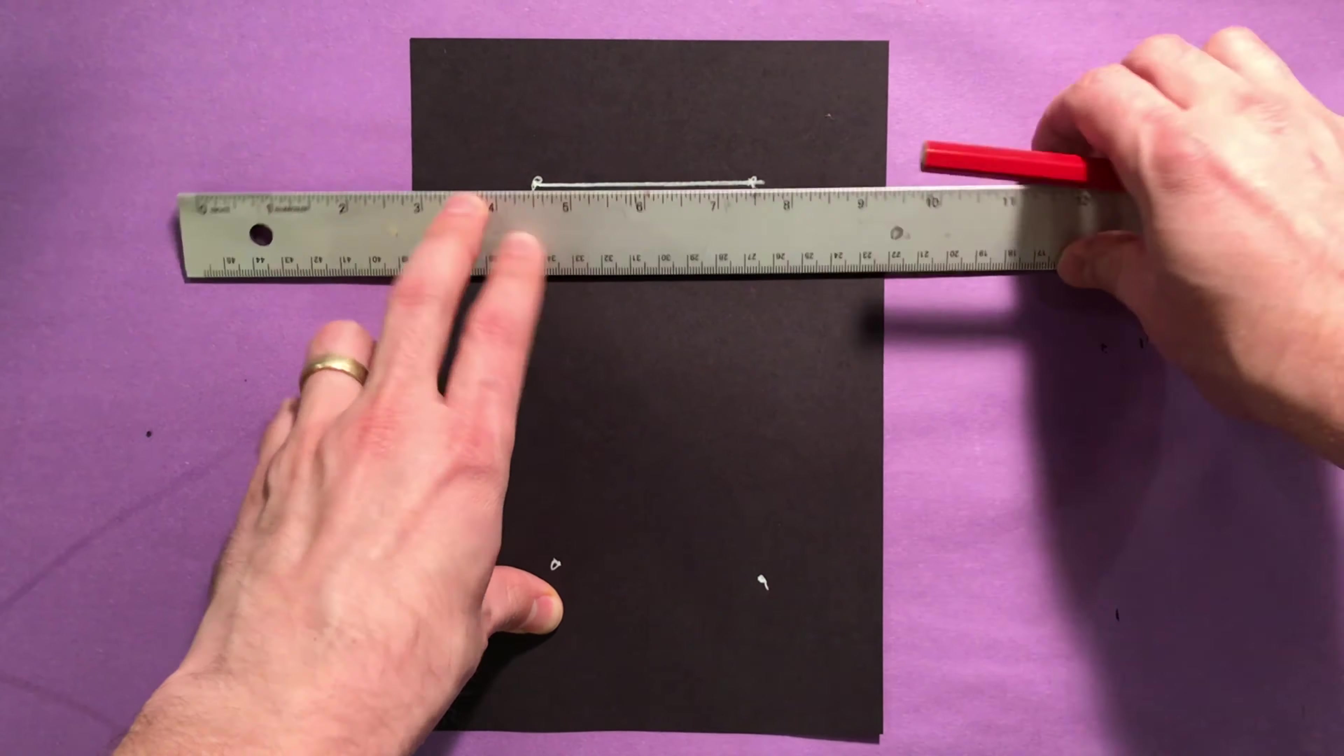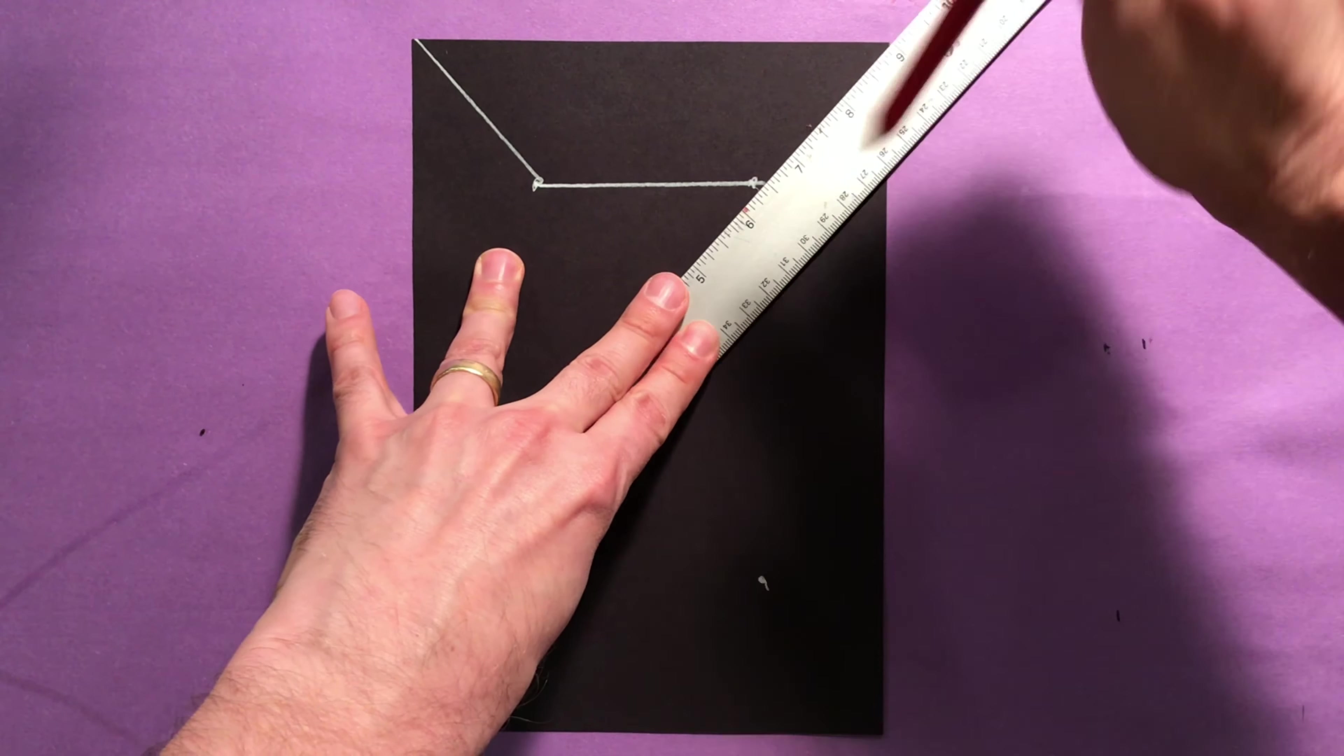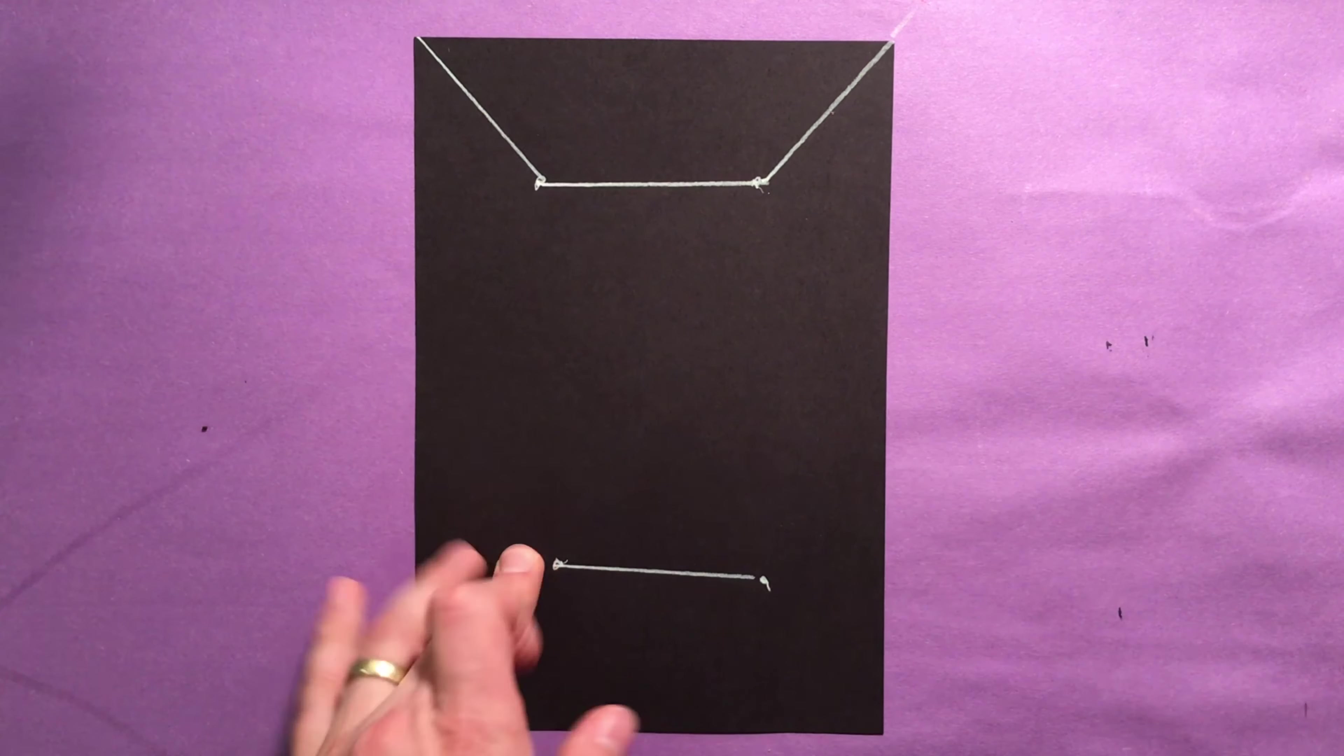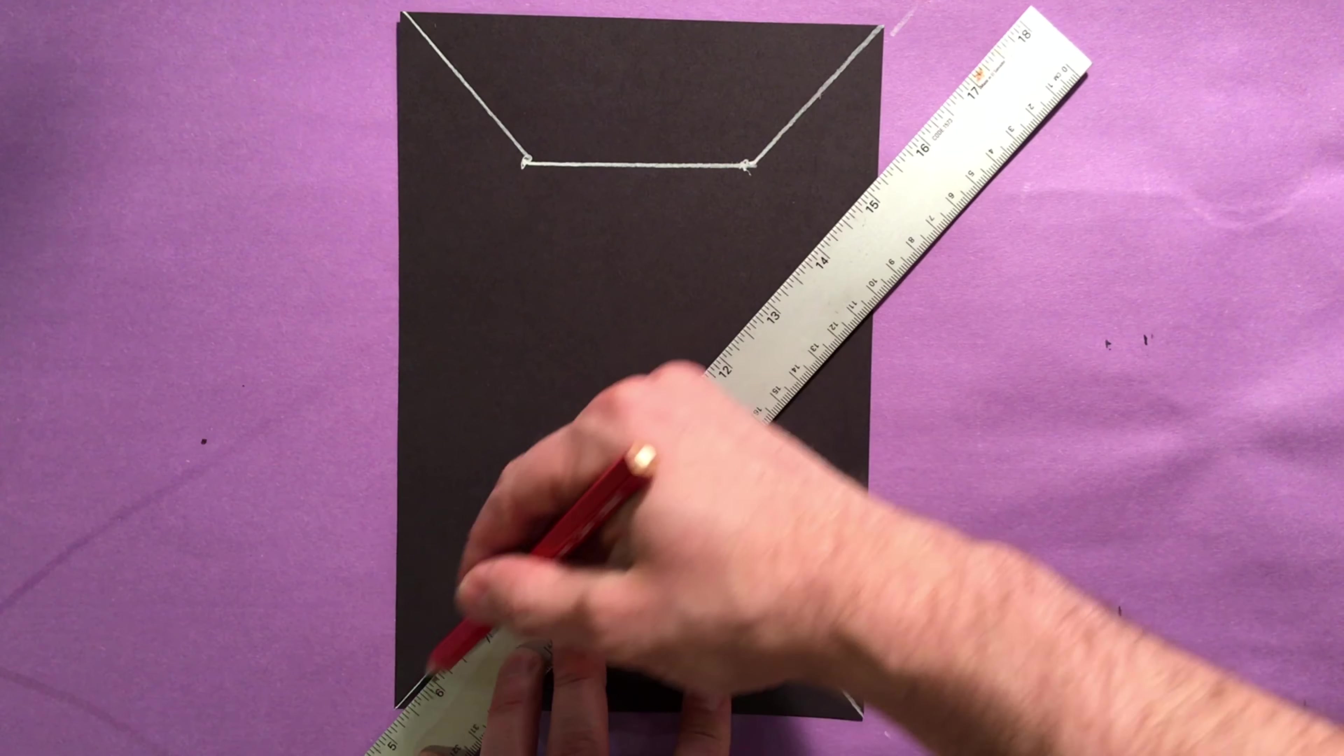And then with the ruler, I connect those two dots on the top, and then connect the corner of the page to the first dot, and the other corner of the page to the second dot. Same thing for the bottom. Connect your two dots, and then connect your corner of the page to the first dot, and the corner of the page to the second dot.